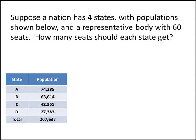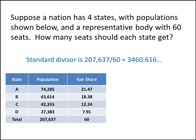As we saw in that video, we can take the standard divisor — which is the total population of the entire country divided by the number of seats — and use that to compute the fair shares. The fair shares tells us how many seats each state should get, but since those numbers aren't whole numbers and the number of seats we assign must be a whole number, we need a way to resolve this problem.